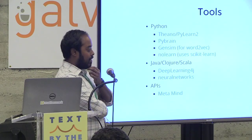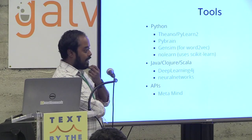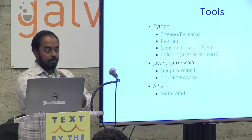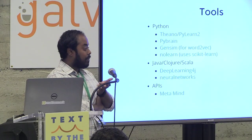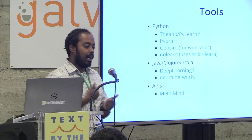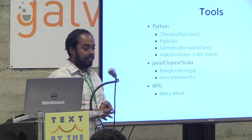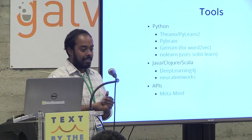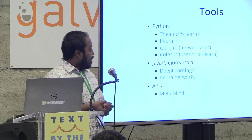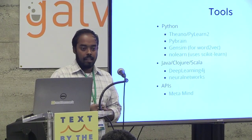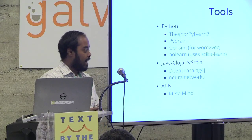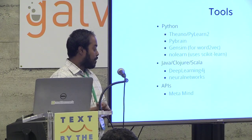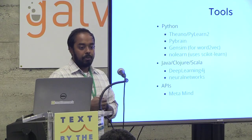Gensim is another Python library with a great implementation of Word2Vec that you can use to train your own word vector models. NoLearn is a very scikit-learn-esque Python learning framework — it works great because you can pipe it straight into all the scikit-learn cross-validation and pipelining interfaces. In the Java, Clojure, Scala world, Adam Gibson talked about Deep Learning 4J yesterday — it's being actively developed, very performant, and you can scale it out on Hadoop or GPU.